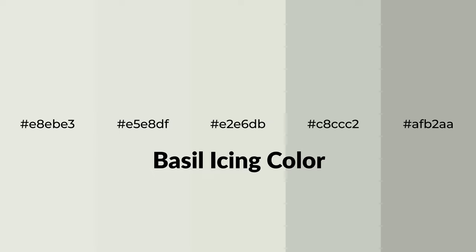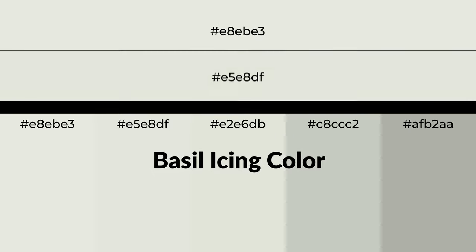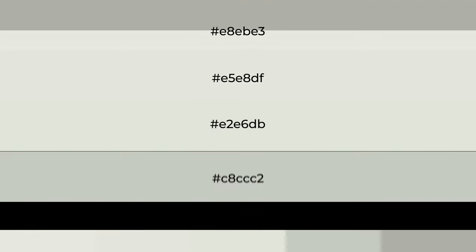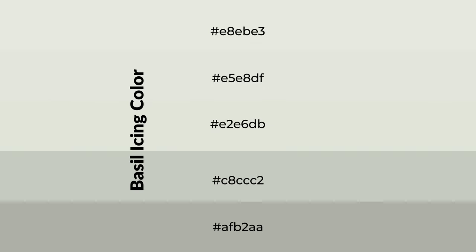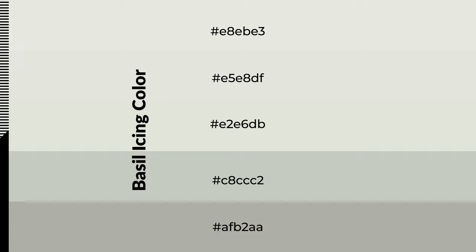Warm shades of basil icing color with a gray hue for your next project. To generate tints of a color, we add white to the color — tints create light and exquisite emotions. To generate shades of a color, we add black to the color, and it is used in patterns, 3D effects, and layers. Shades create depth and drama.